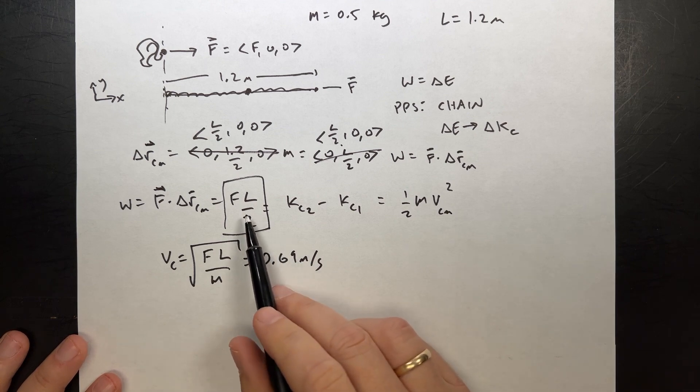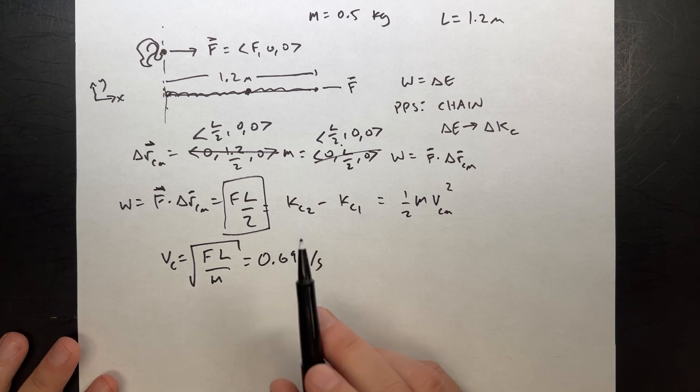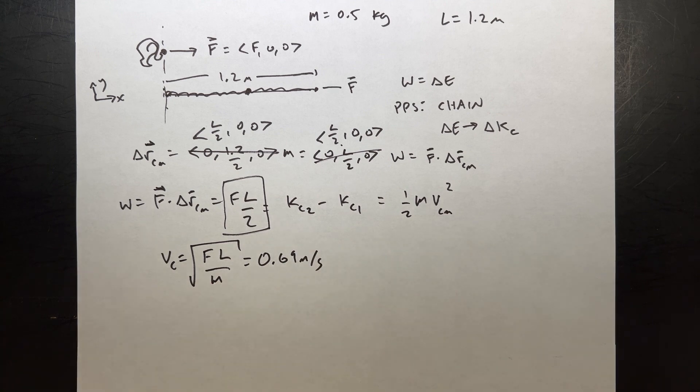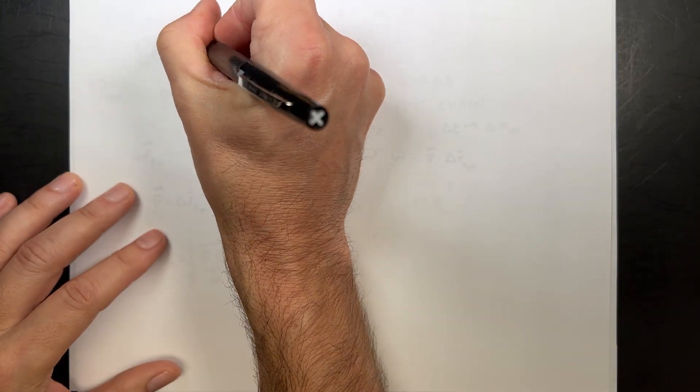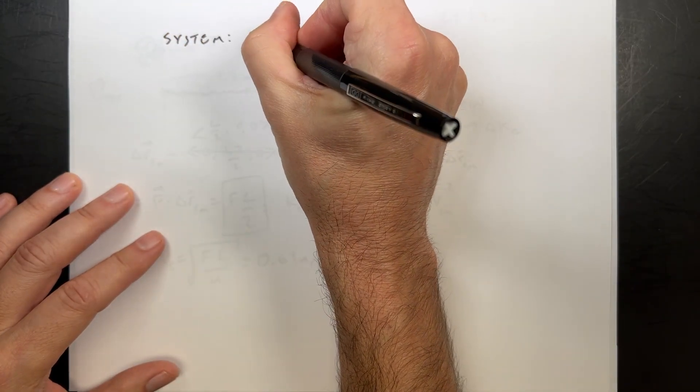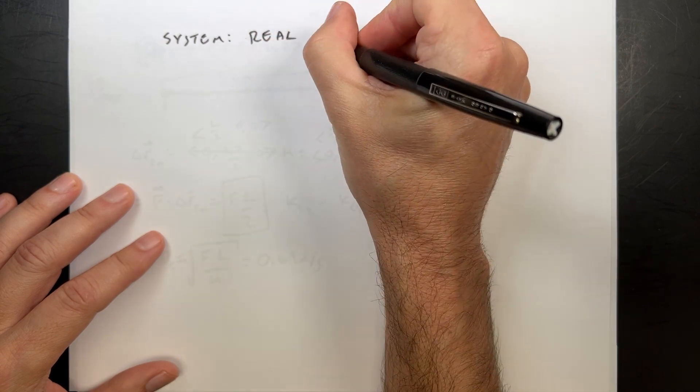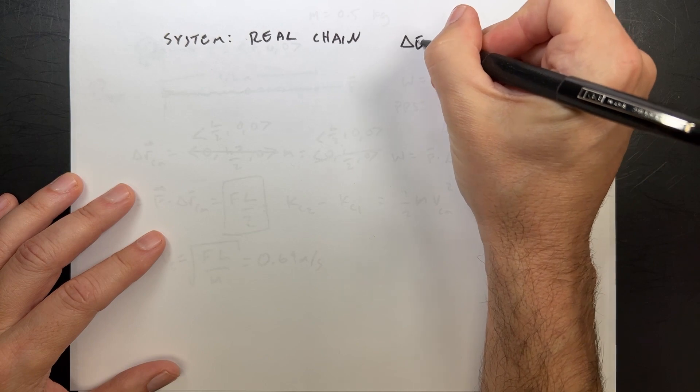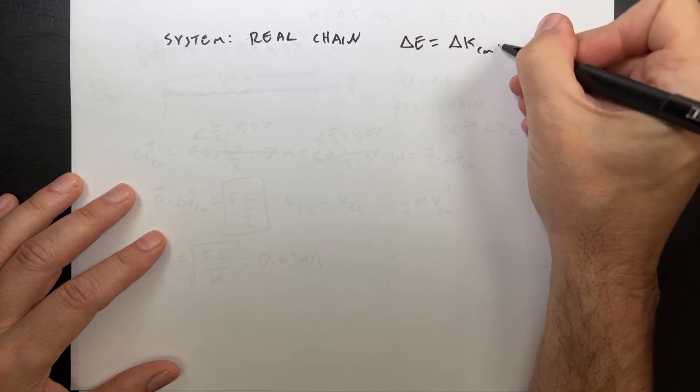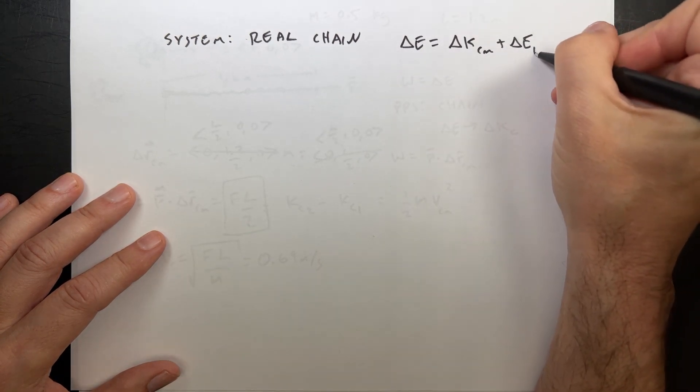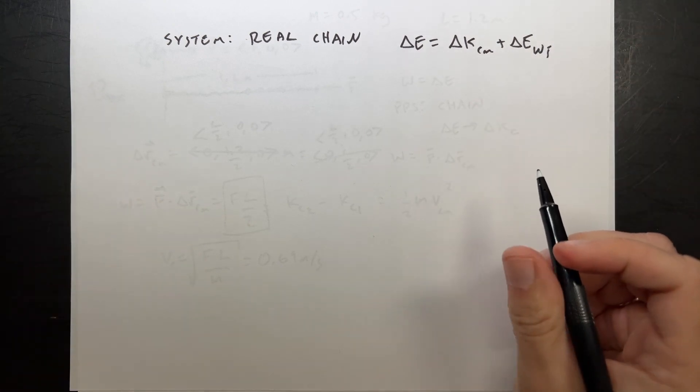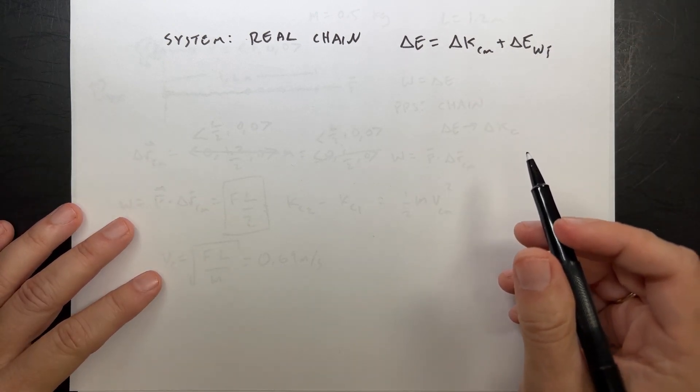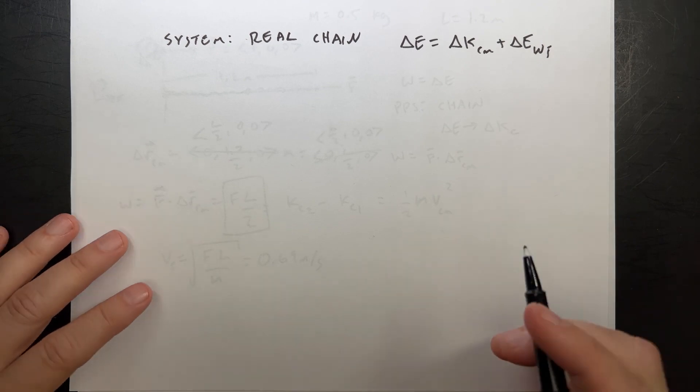That's the work done by the point particle system and the change in kinetic energy of the center mass. But let's use the system of the real chain. In the real system, the change in energy is going to be the change in kinetic energy of the center mass plus the change in internal energy or whatever kind of energy you want to have. Other stuff. It could be rotational. This one's not rotating, but it could be stuff like that.